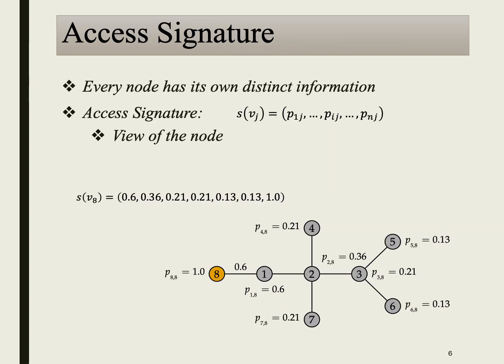We consider each node as a unique source of information within the network. To quantify a node's advantage in accessing all the distinct information available, we introduce access signatures. As an example, we can see the access signature for node 8.